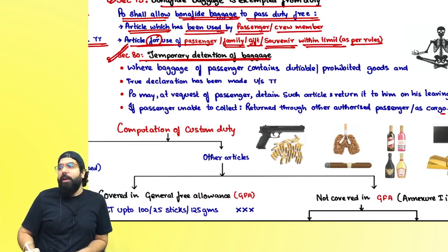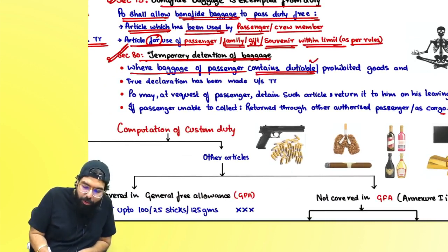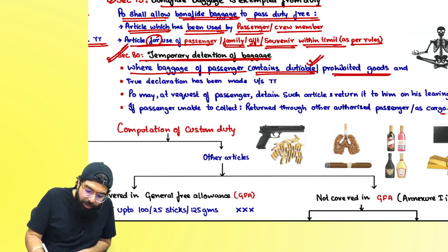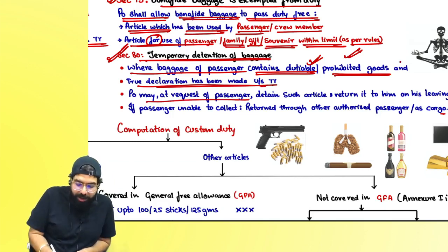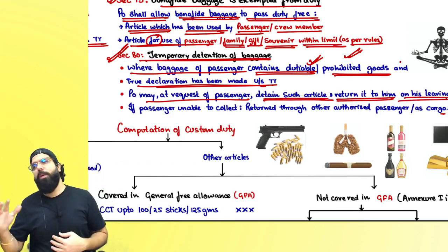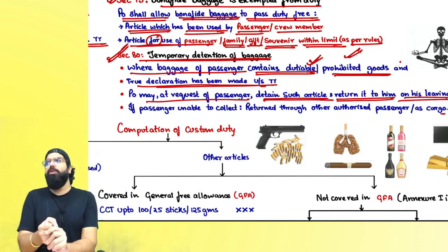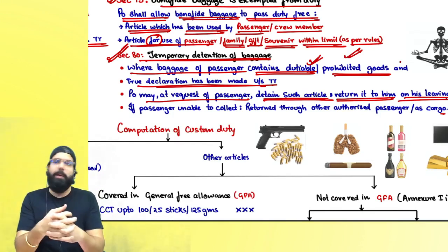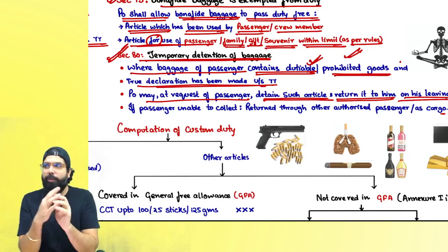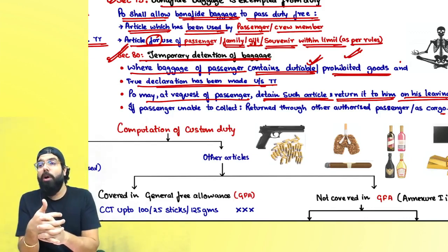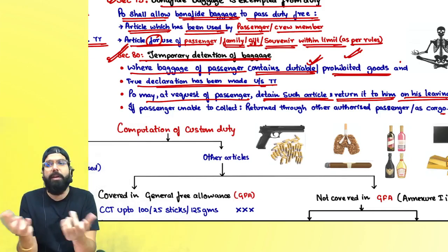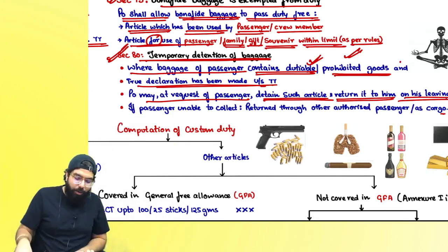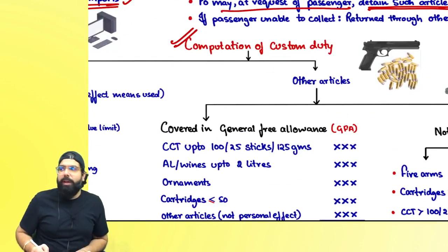Section 80 deals with temporary detention of baggage. When you have come from outside India and your baggage consists of dutiable goods or prohibited goods which you can't or don't want to clear, and you have given a true declaration, you can request the proper officer to detain such articles and return them to you on leaving India. When you are going back from India they will return it to you, or you can authorize someone to collect it, or the officer can send it to you as cargo.